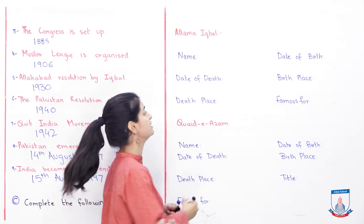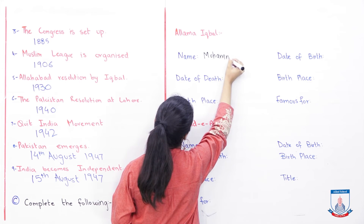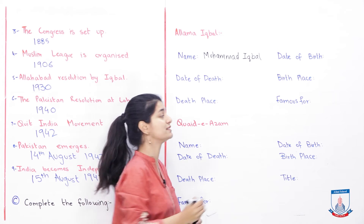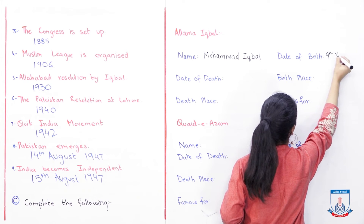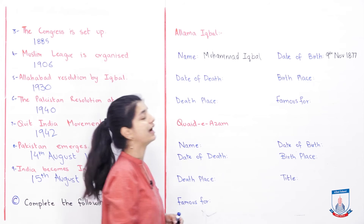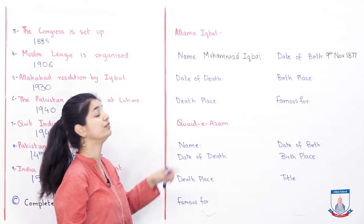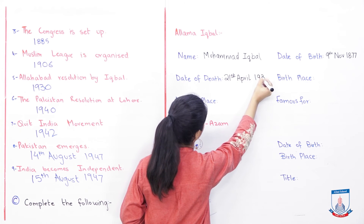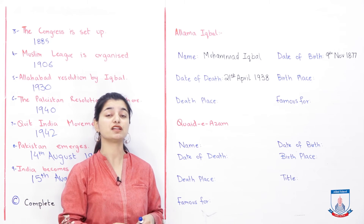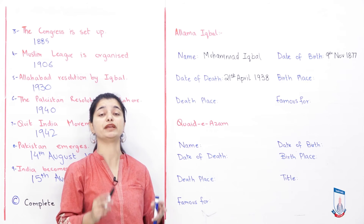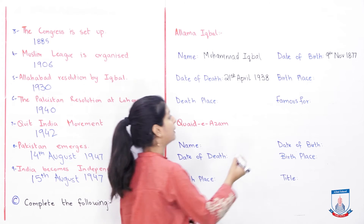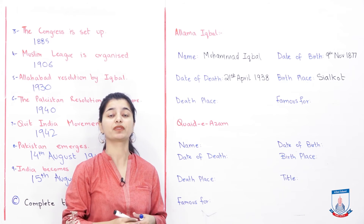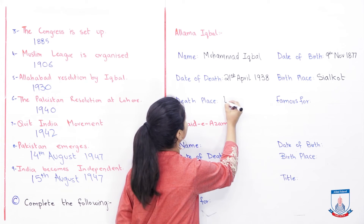What was the name of Allama Iqbal? His actual name was Muhammad Iqbal. What was his date of birth? His date of birth was 9th November 1877. His date of death was 21st April 1938 — this was way before Pakistan was formed, so even though Pakistan was his idea, he could not live long enough to see its formation. For birthplace, he was born in Sialkot, Punjab. For death place, he died in Lahore and is also buried near Badshahi Masjid, so we can write Lahore.